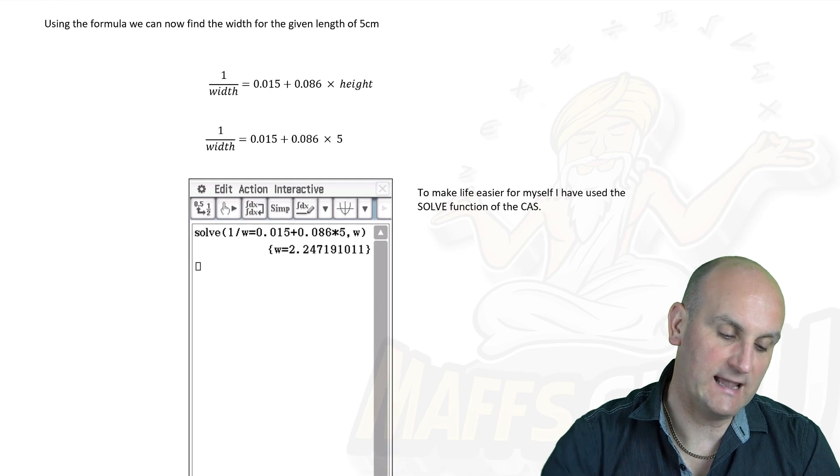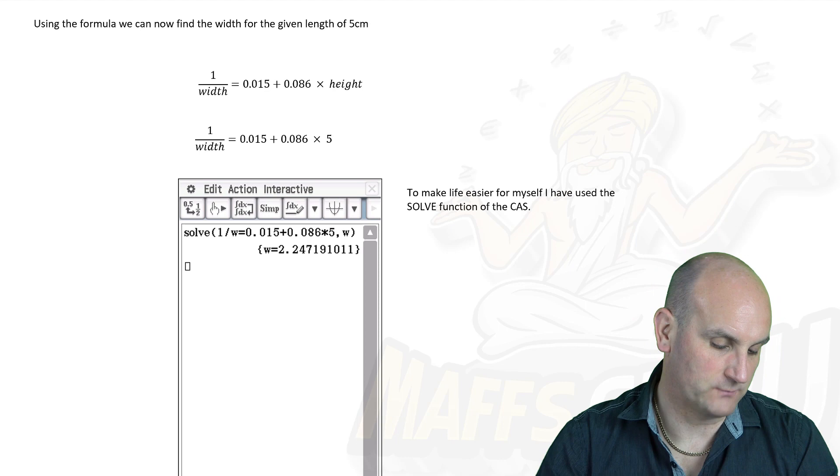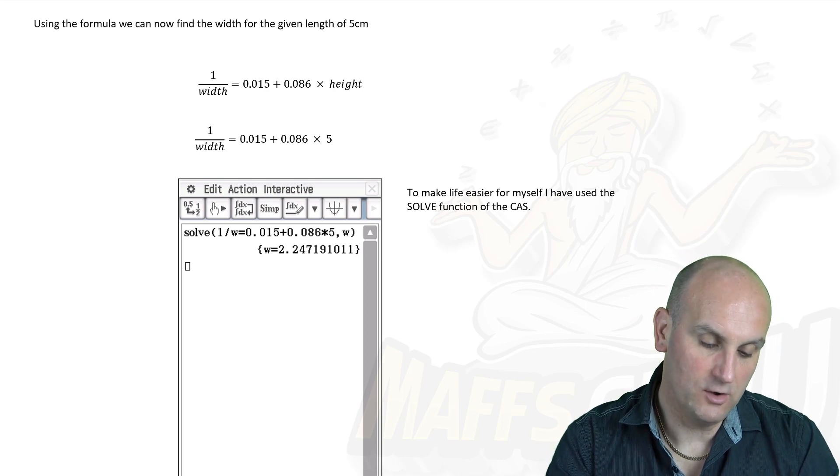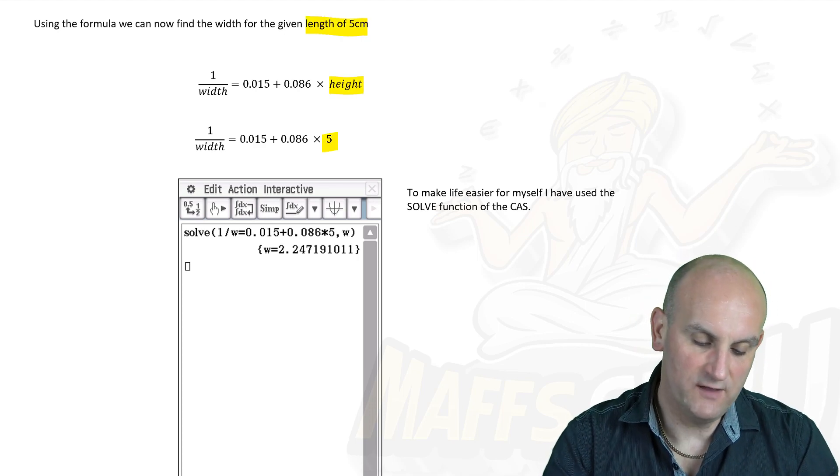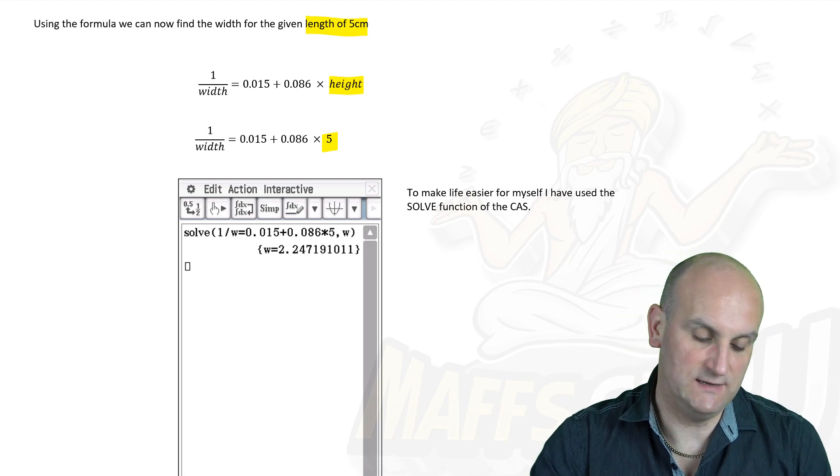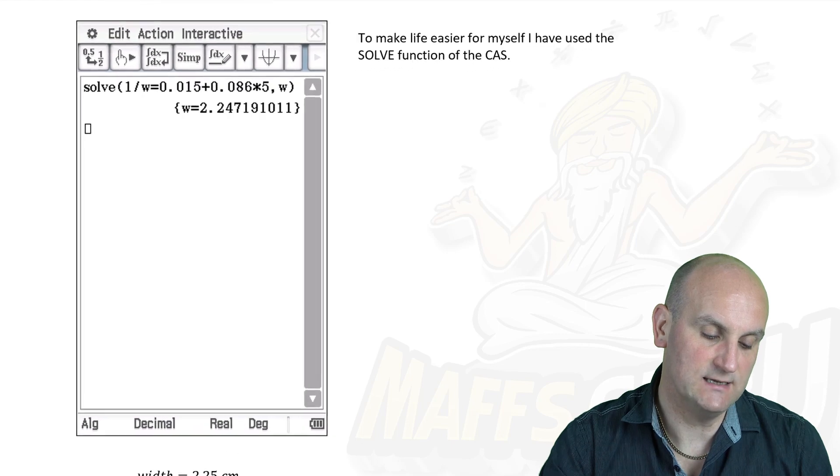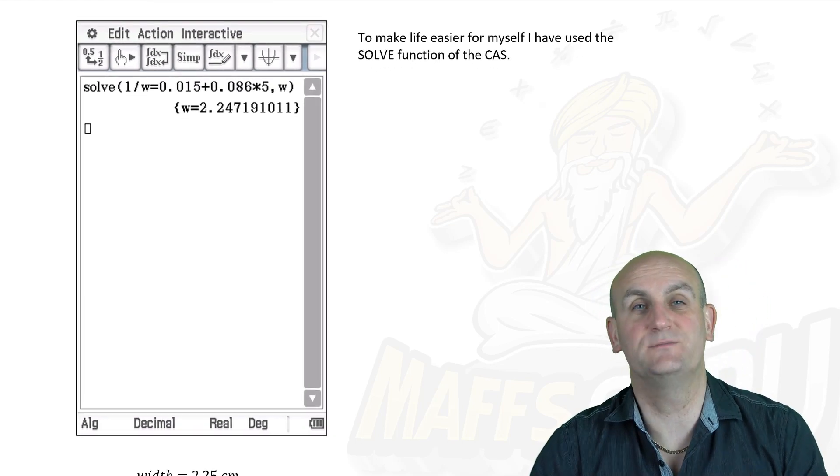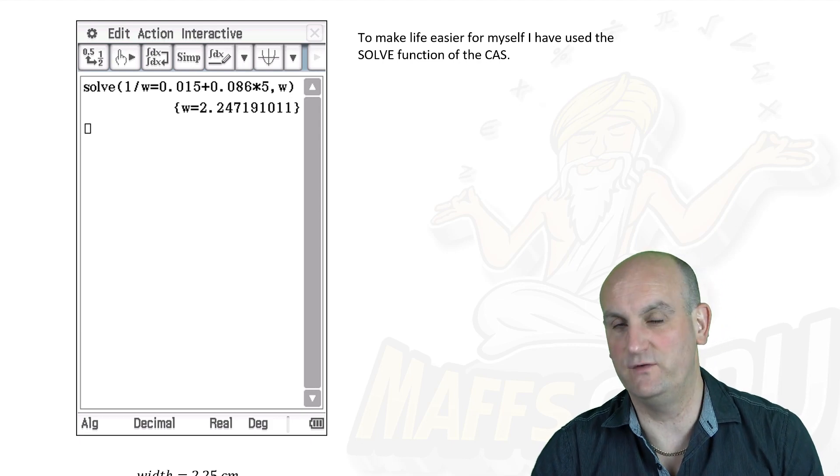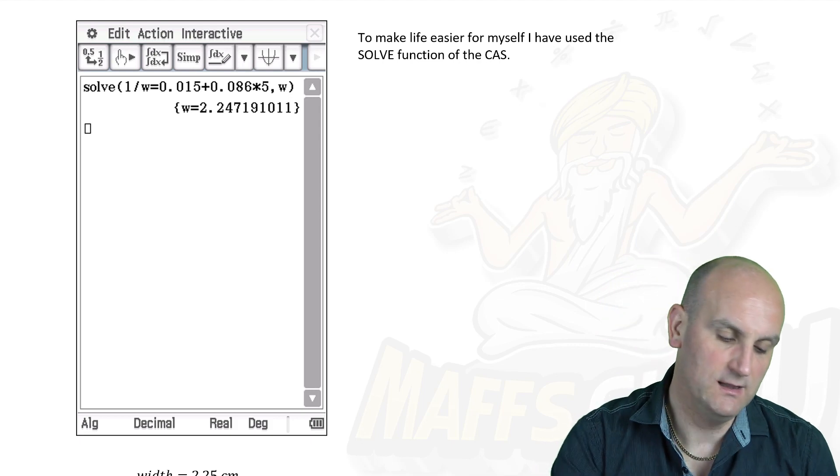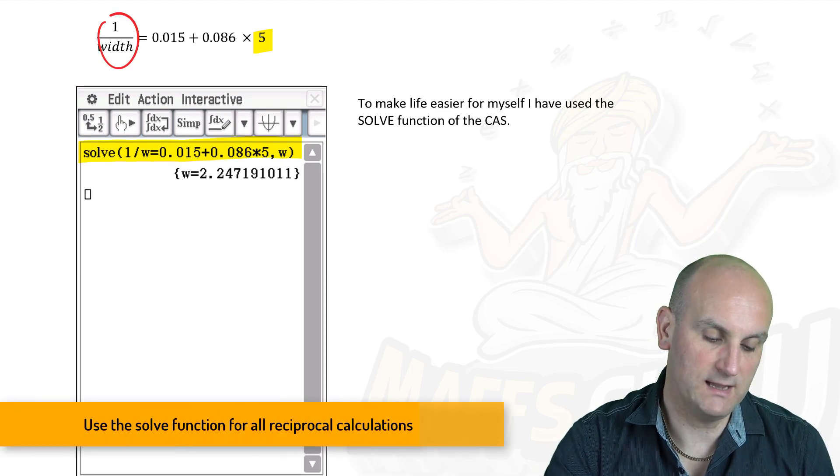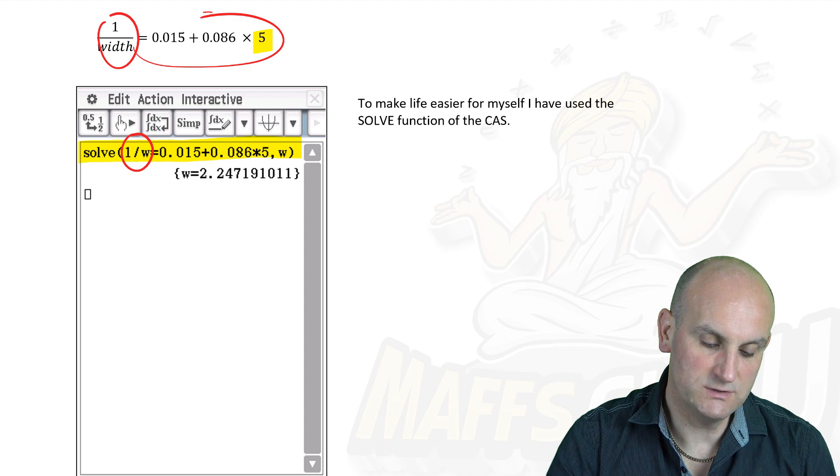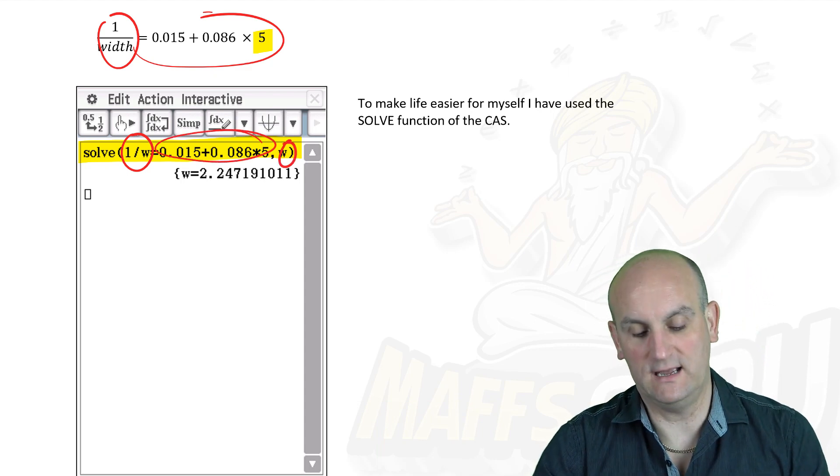It then goes on to say, can we now find the width for a given length? It does say that we have a length of 5 centimeters. And so we're going to change height to 5. I've put it into my calculator to try and help me. In many cases, my calculator can do all the hard work for me. I don't know that I want to do the algebra of 1 on width. It's a little bit confusing. So my advice to you here is to actually use the solve function and put your calculator in. 1 on width became 1 on W. The rest of my formula was just typed as it was, and I said, can you solve for W? And out it came as 2.25.